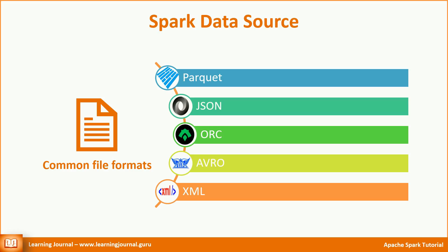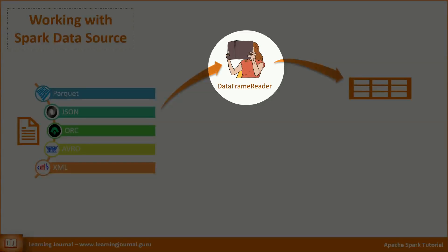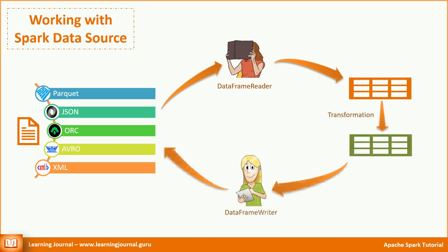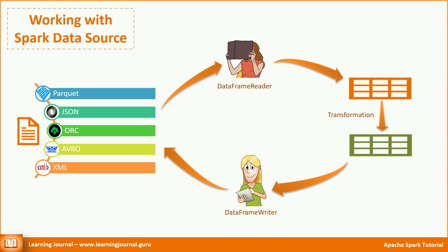The first thing to understand is the general structure of the read and write APIs. To read data from a source, you need a reader — that is where we have the DataFrame Reader interface. Similarly, to write data, you need a writer — that is where we have the DataFrame Writer interface. These two interfaces are a kind of Spark standard for working with any source system. There are few exceptions, however, if the source system can offer you a clean row-column structure, you should get these two interfaces.